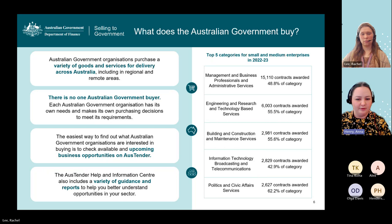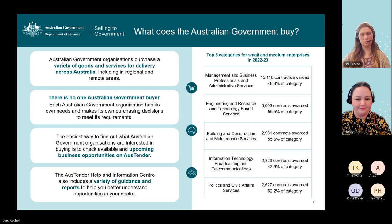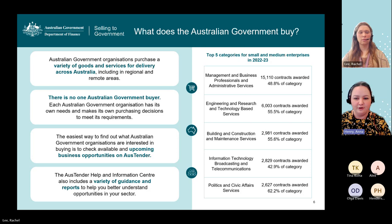So what does the Australian Government actually buy? We purchase a variety of goods and services for delivery across Australia, including in regional and remote areas. There's no one Australian Government buyer — each organisation has its own needs and makes purchasing decisions to meet those needs. The easiest way to find out what Australian Government organisations are buying is to check available and upcoming business opportunities on AusTender. AusTender also has a help and information centre with a variety of guidance and reports to help you better understand opportunities in your sector.